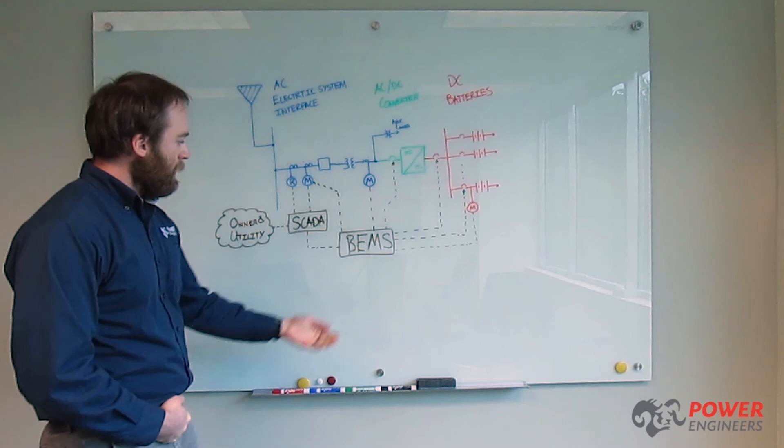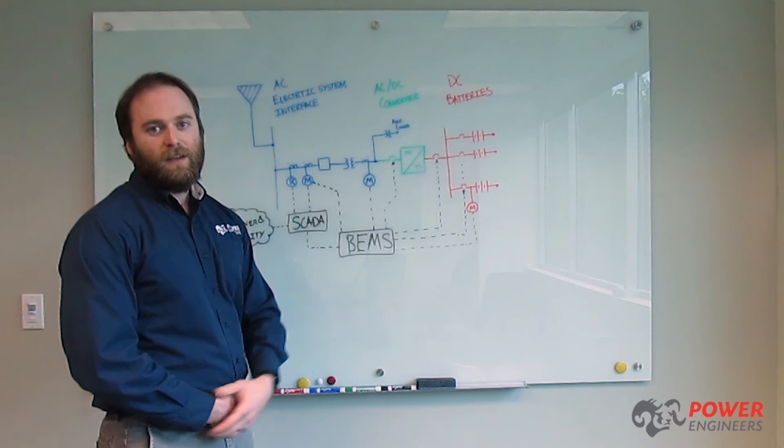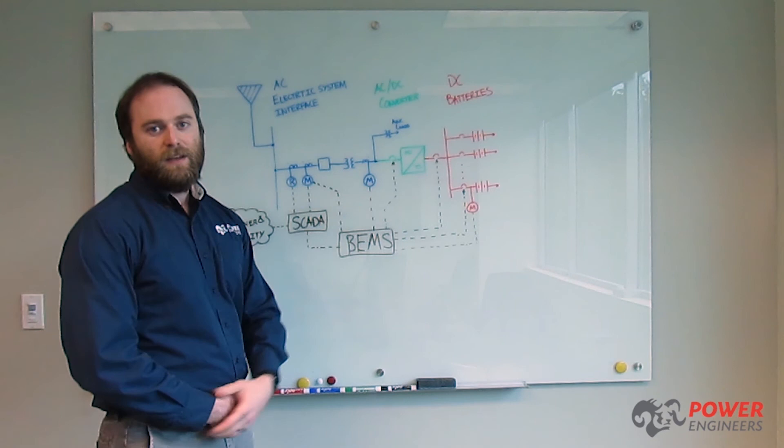The battery energy management system, or BEMS, unifies the AC and DC sides of the BESS to facilitate automatic controls, manual controls, and monitor the health of the system overall.